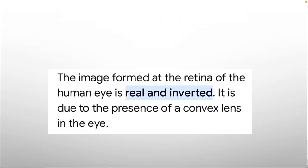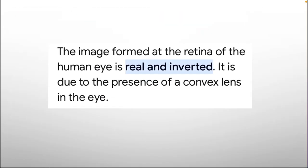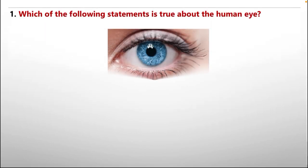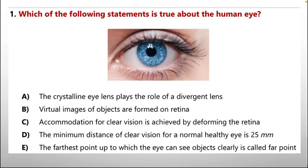Moving on to option B: the image formed at the retina of the human eye is real and inverted, due to the presence of a convex lens in the eye. The option states that virtual images are formed; however, this is the opposite of the correct explanation. So option B is also incorrect.